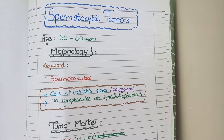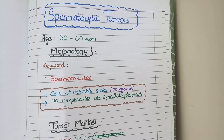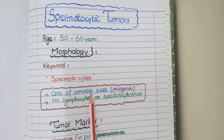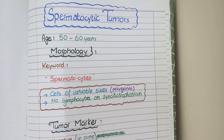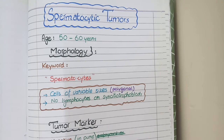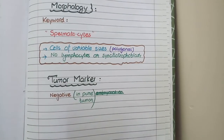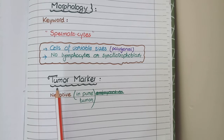As for the morphology of spermatocytic tumors, the keyword is spermatocytes — visible cells of variable sizes that are usually polygonal. Unlike classical seminomas, spermatocytic tumors do not contain lymphocytes or syncytiotrophoblasts. So overall, you see cells of variable sizes without any lymphocytes or syncytiotrophoblasts. Additionally, spermatocytic tumors do not have any tumor marker.